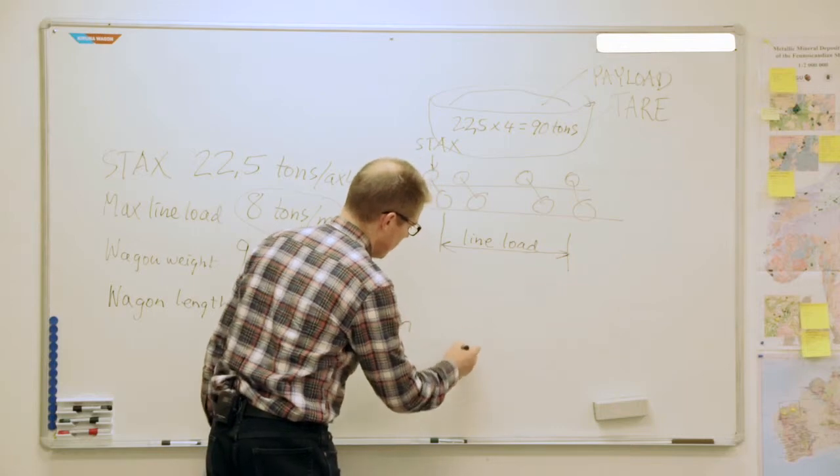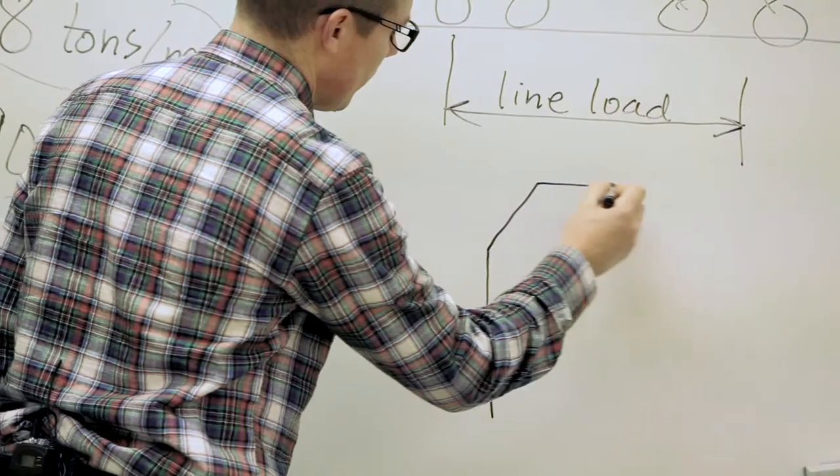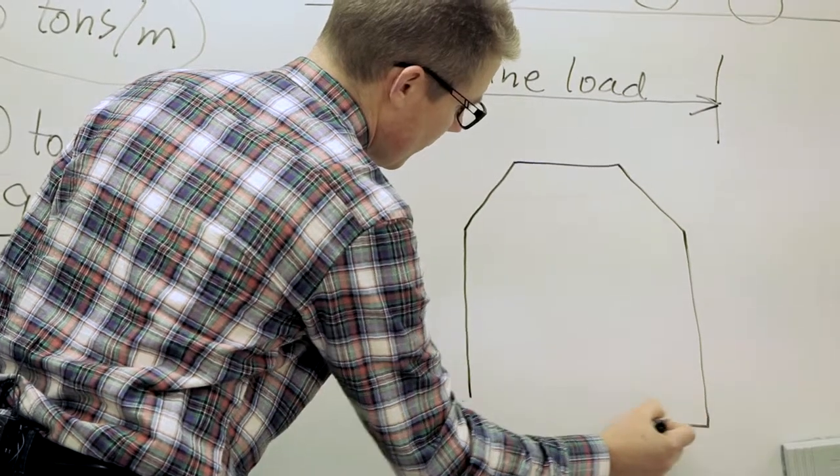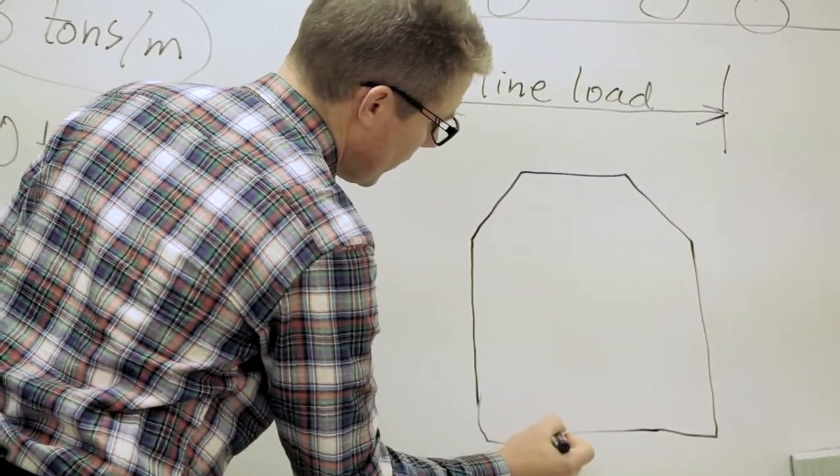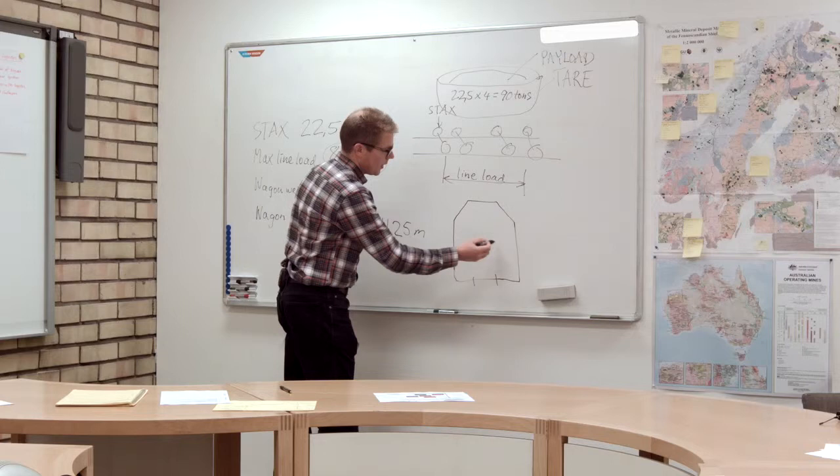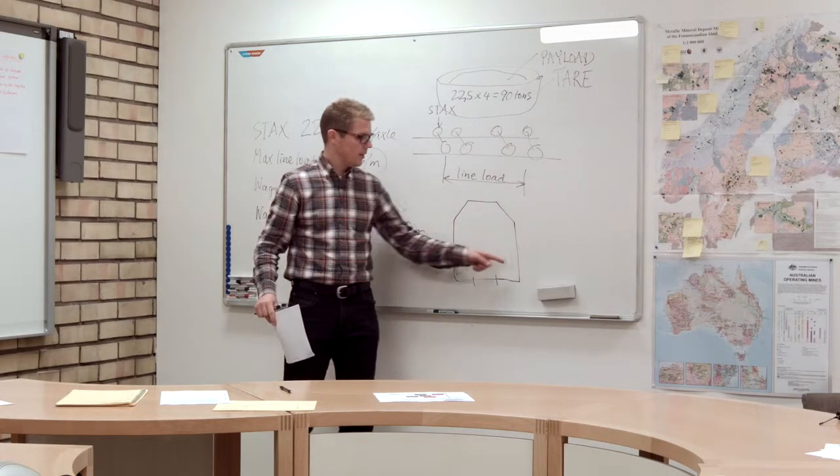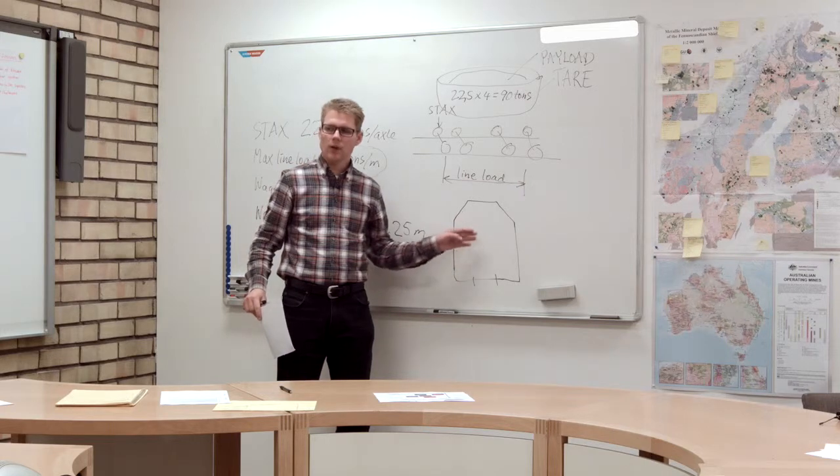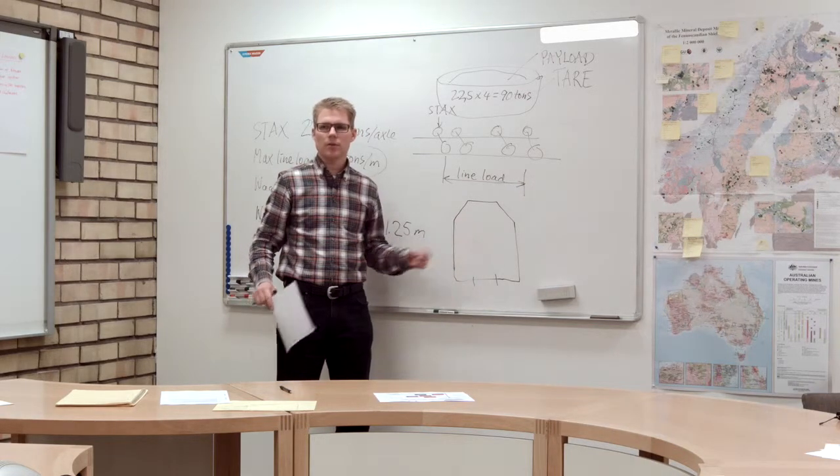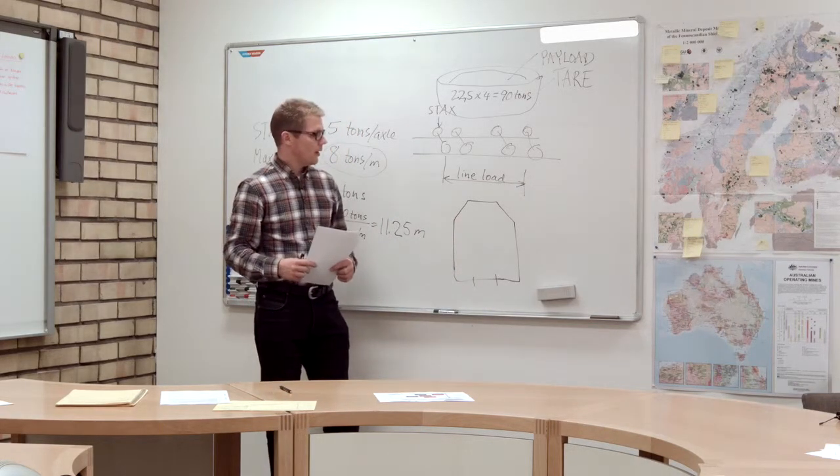an example here of a loading profile. It may look something like this, and here's the tracks. The wagon has to stay within this loading profile at all times during transport.